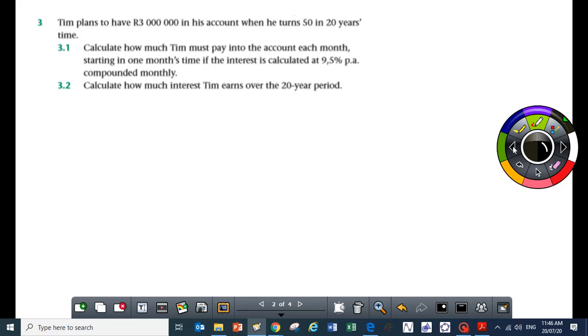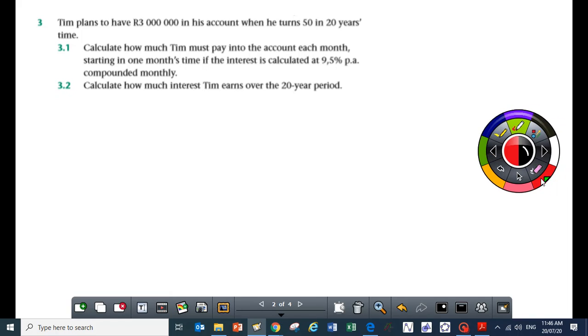In this question, it is very important to highlight some key things. The person plans to have R3 million in 20 years' time. Calculate how much Tim must pay into the account each month, starting in one month's time, if the interest is calculated at 9.5% per annum compounded monthly.